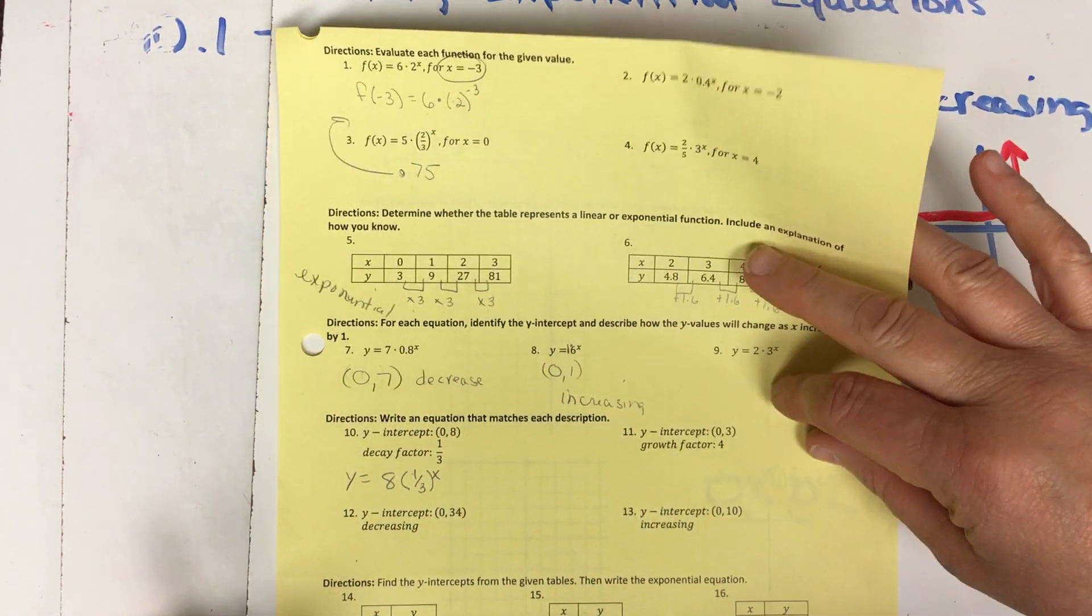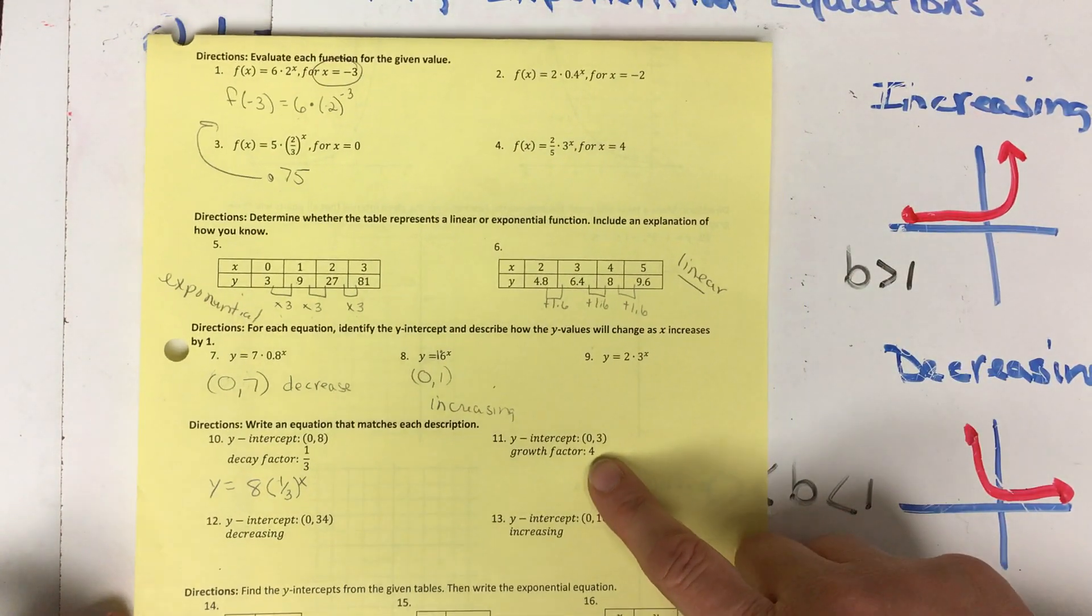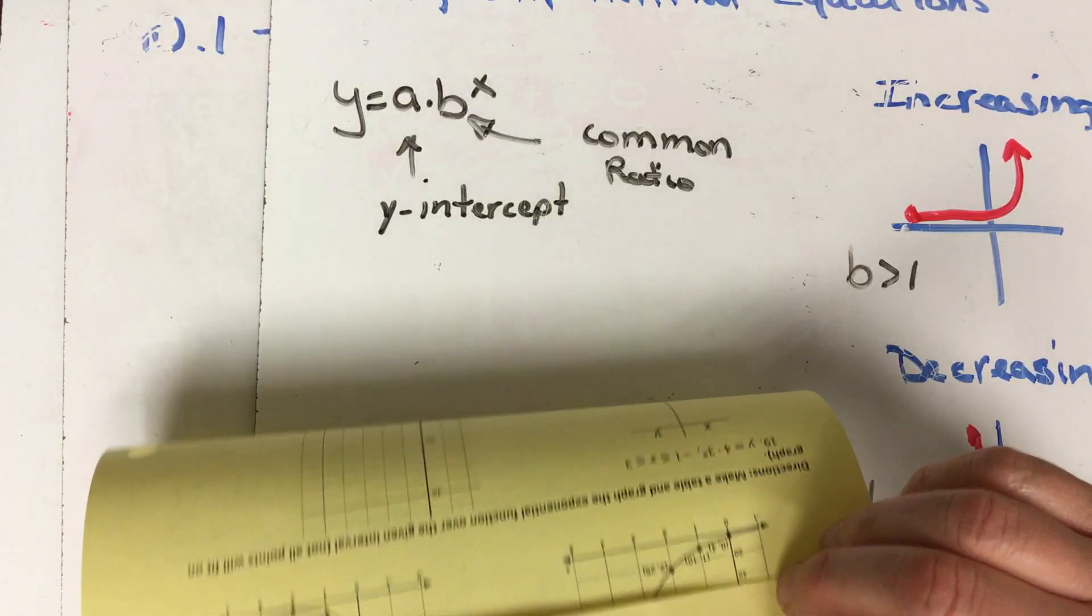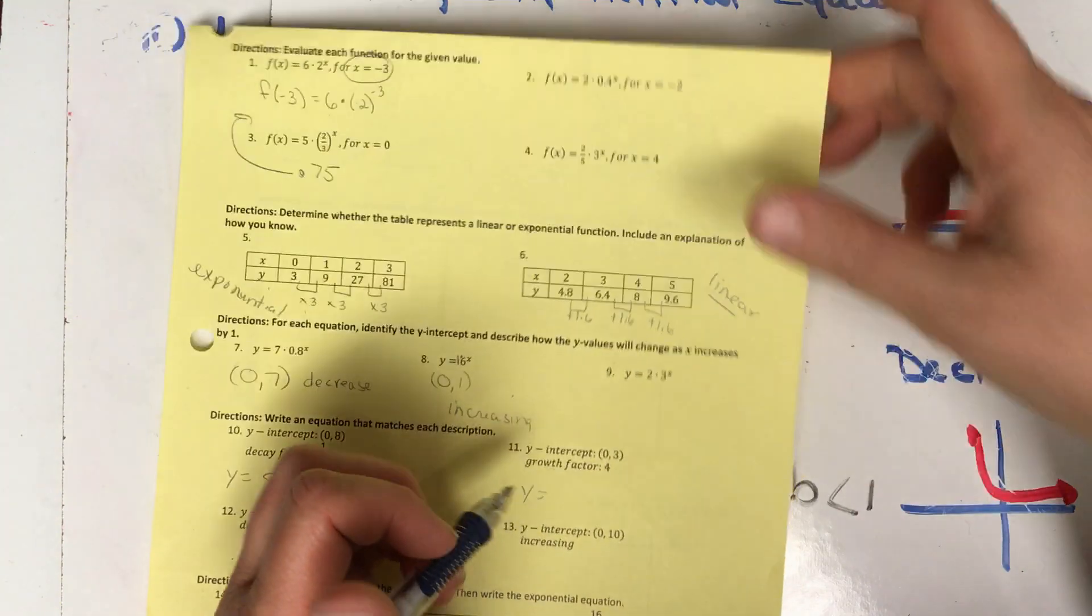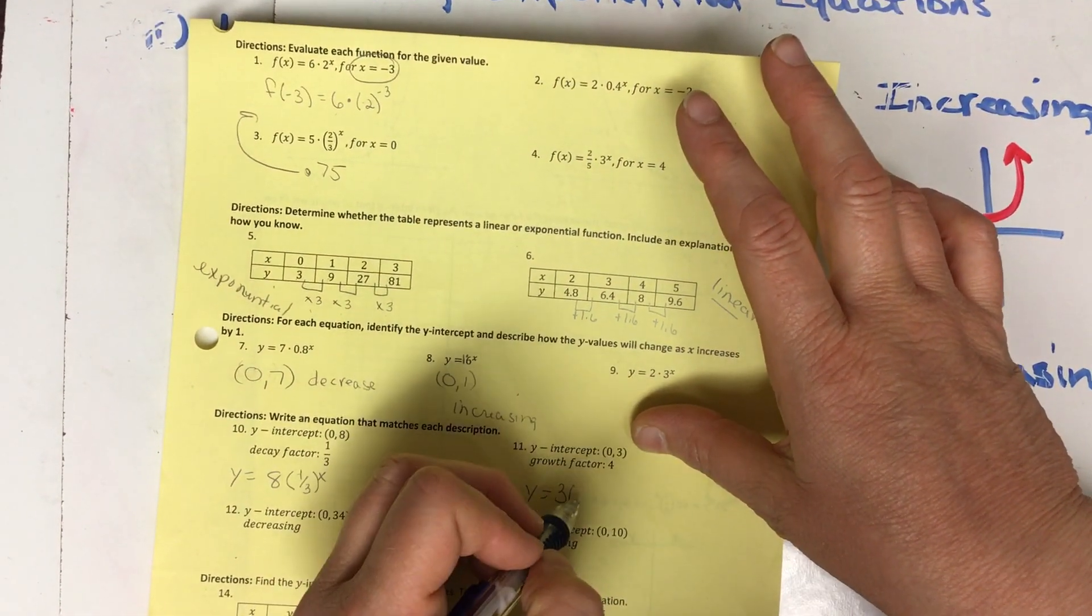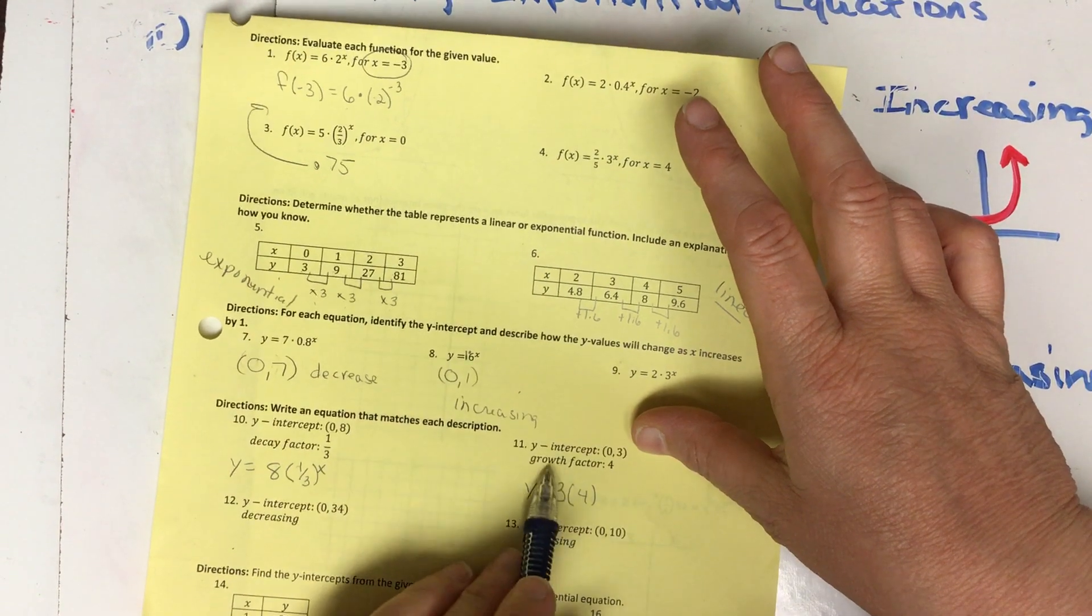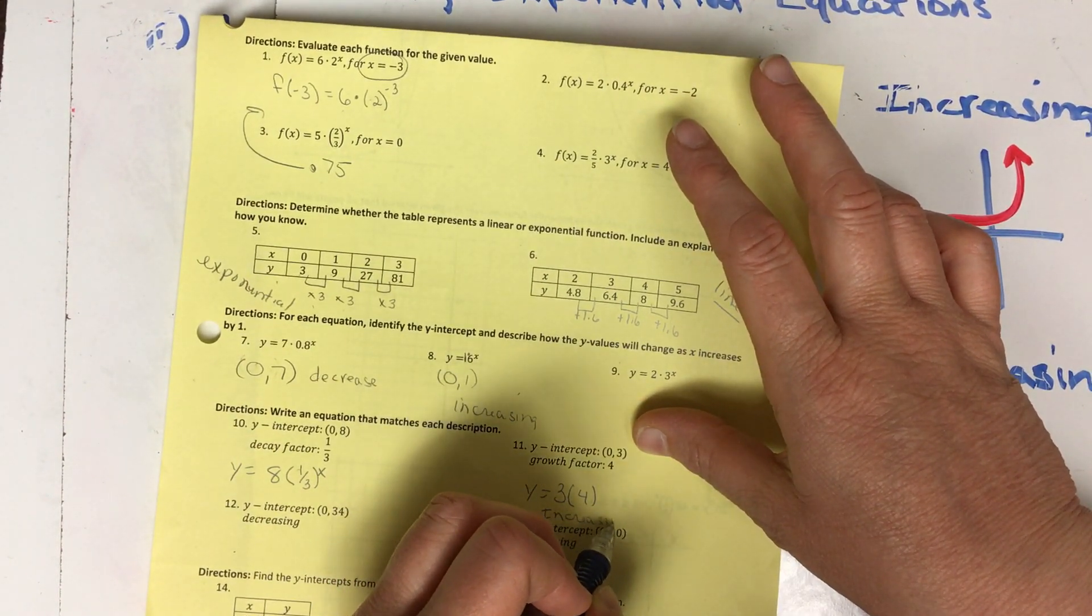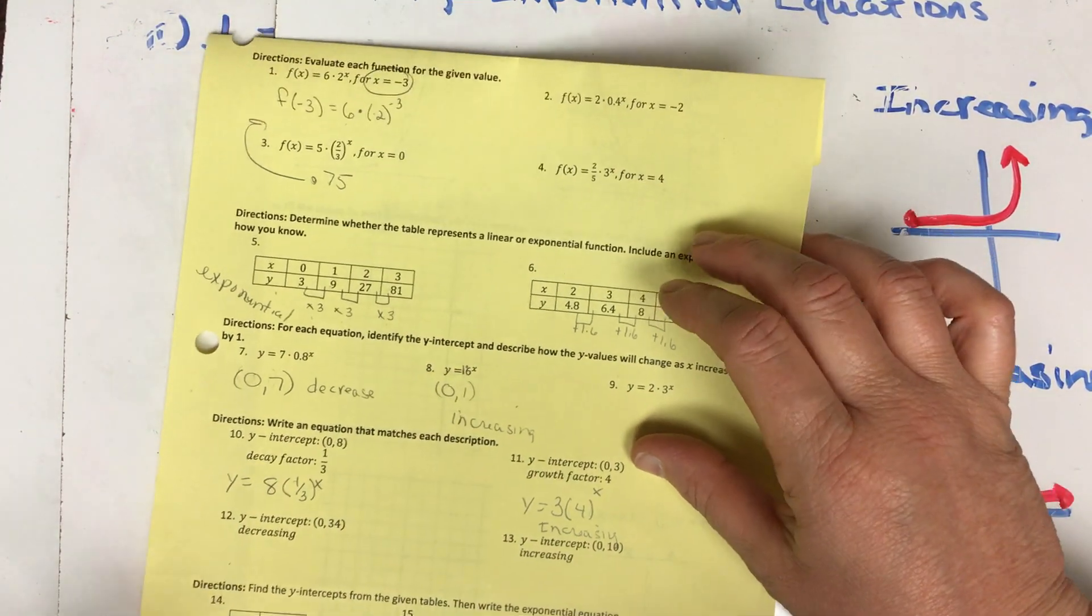Alright, let's try another one, let's try one with a growth factor this time. Our y-intercept, in my notes, y-intercept is my first value, and that is 3. Growth factor is 4, it's getting bigger, it's growing, so I know it's increasing. Oh, and don't forget the x, because we're an exponential.